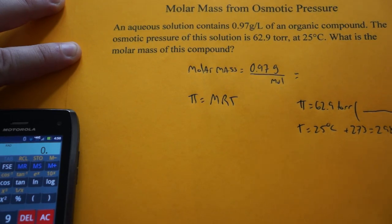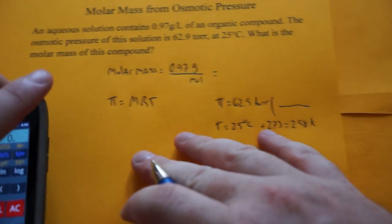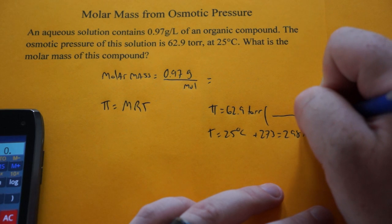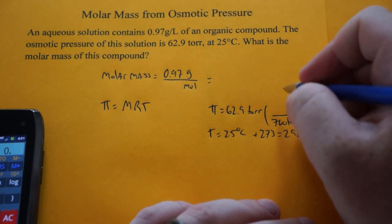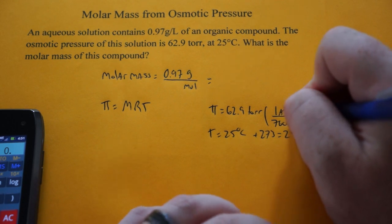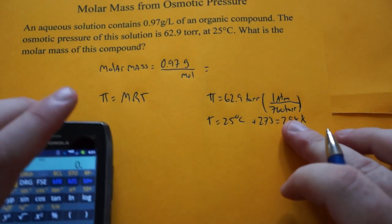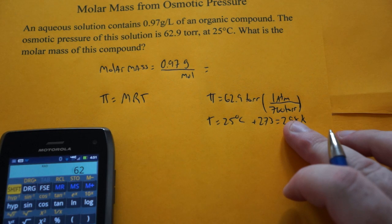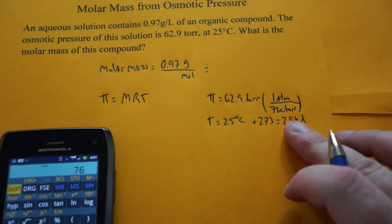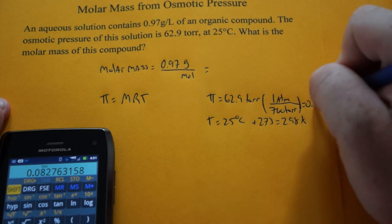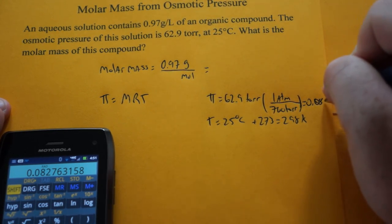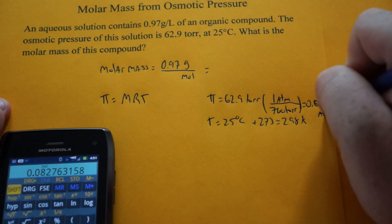And this we need in atmospheres. So what we're going to do is we're going to convert that to atmospheres. There are 760 Torr per one atmosphere. So I'll just do 62.9 divided by 760 and you get 0.0828 atmospheres.